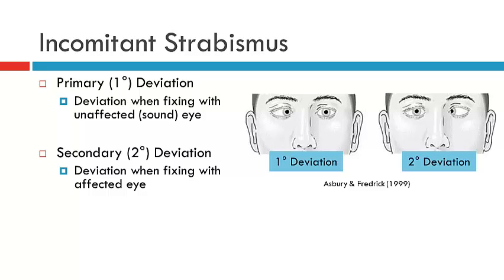With Incomitant Strabismus, the primary deviation is the deviation when the patient is fixing with the unaffected or sound eye. For instance, with a left superior oblique palsy, if the patient was fixing with the right eye — the unaffected eye — this is the primary deviation. However, if the patient fixes with the left eye, the affected eye, you now have the secondary deviation.